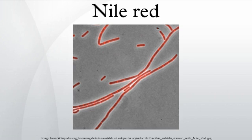Nile red is a lipophilic stain. It is produced by boiling a solution of Nile blue with sulfuric acid. As can be seen from the structural formulae, this process replaces an iminium group with a carbonyl group.